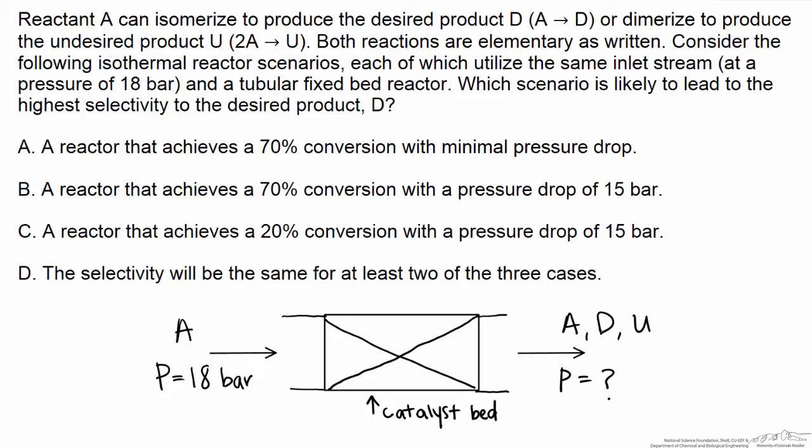We expect to form a couple of products during this reaction, so we can form either desired product D, which is a first order reaction based on the fact that the reaction is elementary, as an A to D reaction.